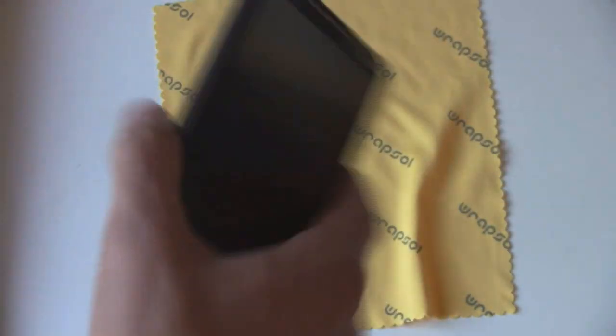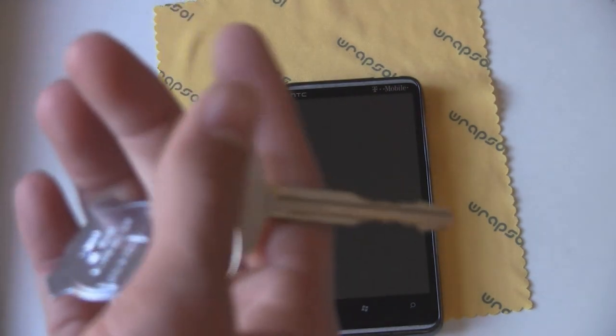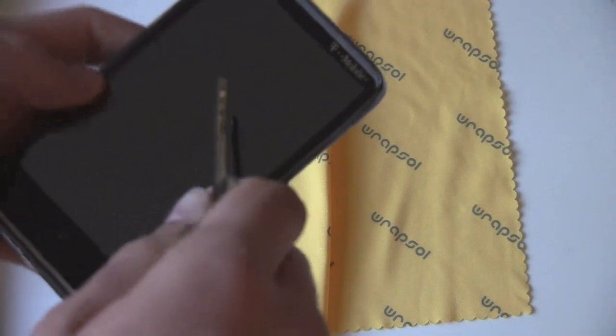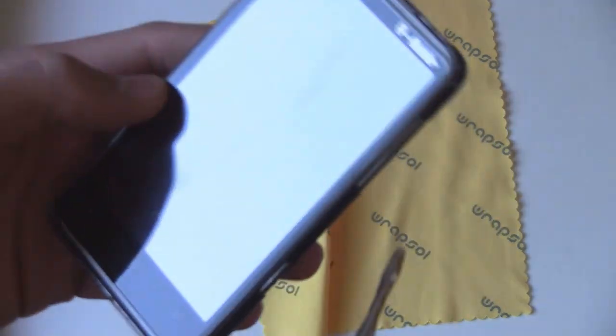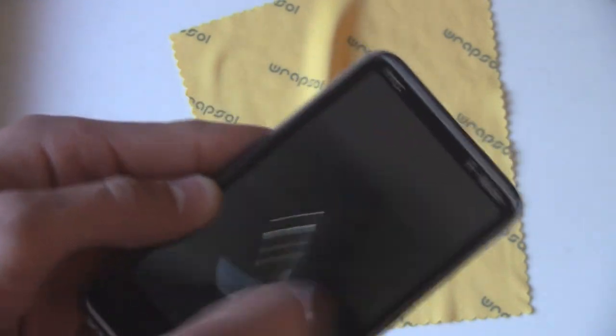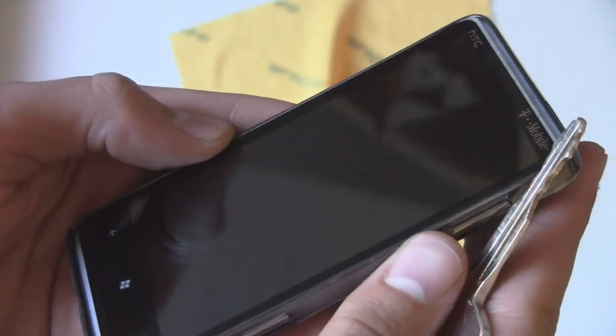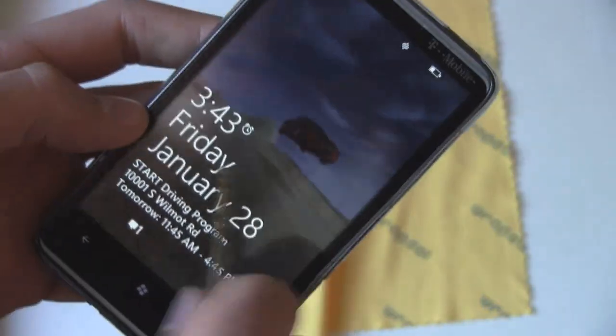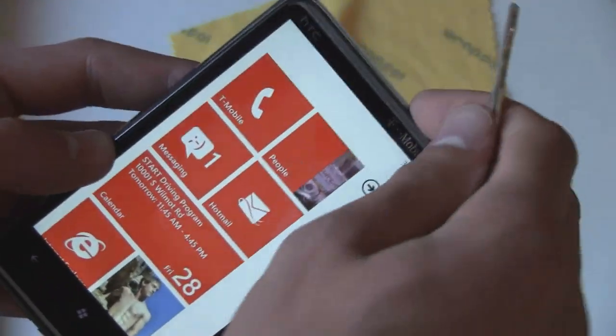Right now, I'll show you how this actually fares up against things like car keys, because it's supposed to protect against scratches, right? So, I'm rubbing against the screen here, and I'm actually pushing really hard, and not a single scratch stayed there. It's incredible.